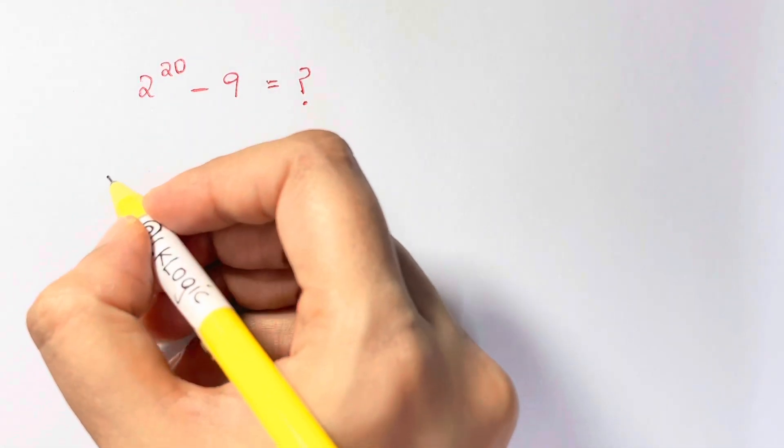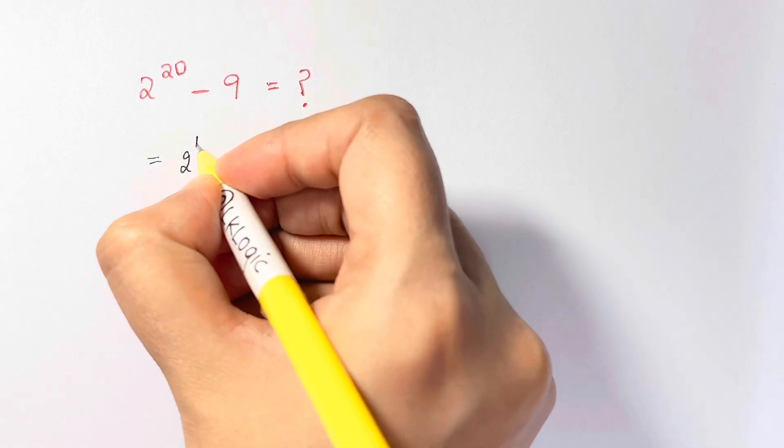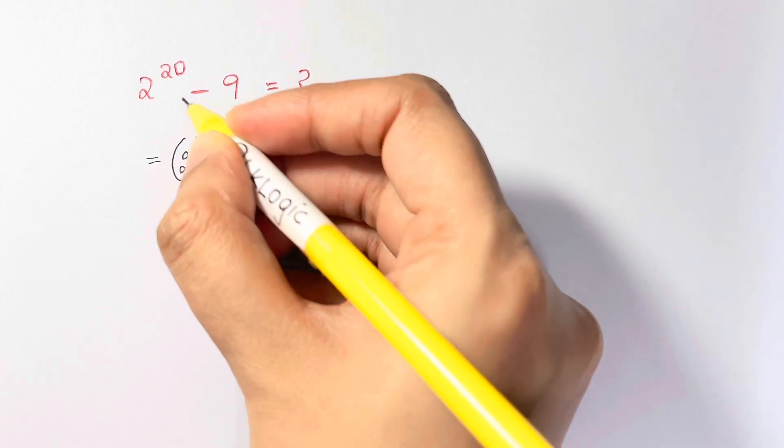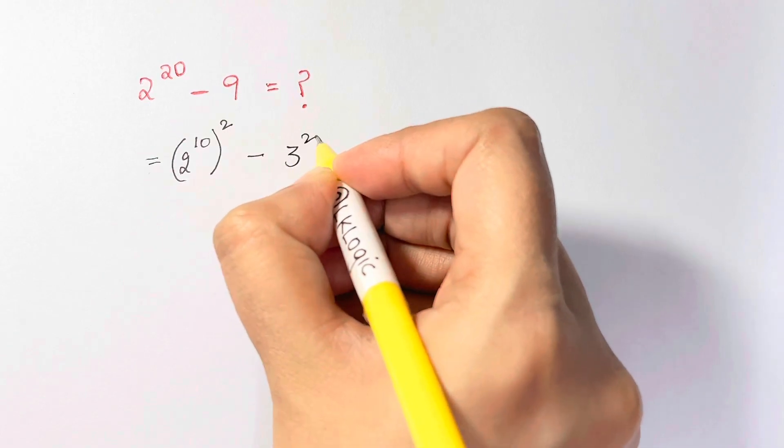First, let's take 2 to the power of 10 whole square. Now if we just do it like this, 10 times 2 is 20, you get back the same thing minus 3 square. 9 can be written as 3 square.